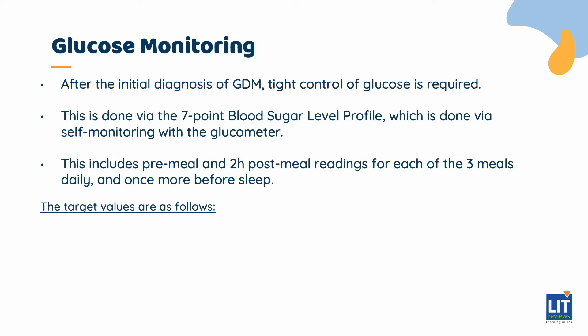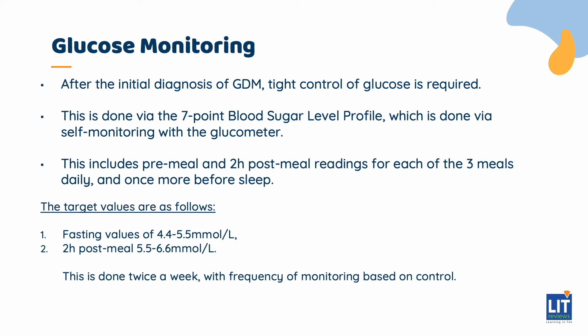The target values are as follows: fasting values of 4.4 to 5.5, and 2-hour post-meal readings of 5.5 to 6.6. This is done twice a week, with frequency of monitoring based on control. Additionally, a target HbA1c of less than 6% is recommended.